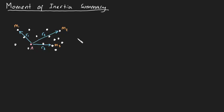The moment of inertia about A is written as i subscript a and is defined to be the sum of ri squared mi.